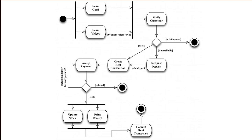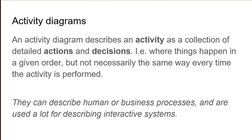So let's dive into it. First, let's get the definition. An activity diagram describes an activity as a collection of detailed actions and decisions. That means things happen in a given order, but not necessarily the same way every time the activity is performed. So they are more advanced than a simple recipe or sequence of events. In the example before, the diagram described what to do when something happened — like the customer being unreliable — but this isn't something that happens every single time. That's why activity diagrams are very useful in describing interactive systems: you cannot plan what the user will do, but you can define what actions will happen when or if she does something.